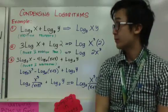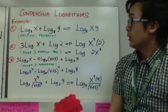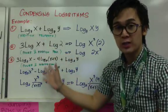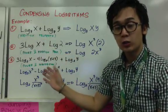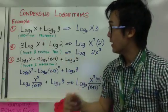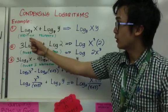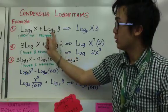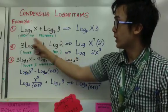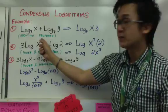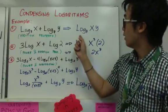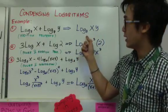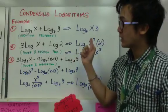Now, condensing logarithms. When condensing, the given expressions are longer logarithms and the goal is to shorten them. For number 1, logarithm of x base 7 plus logarithm of y base 7 — using the addition property, we can condense it into logarithm of xy base 7. So we've shortened it.